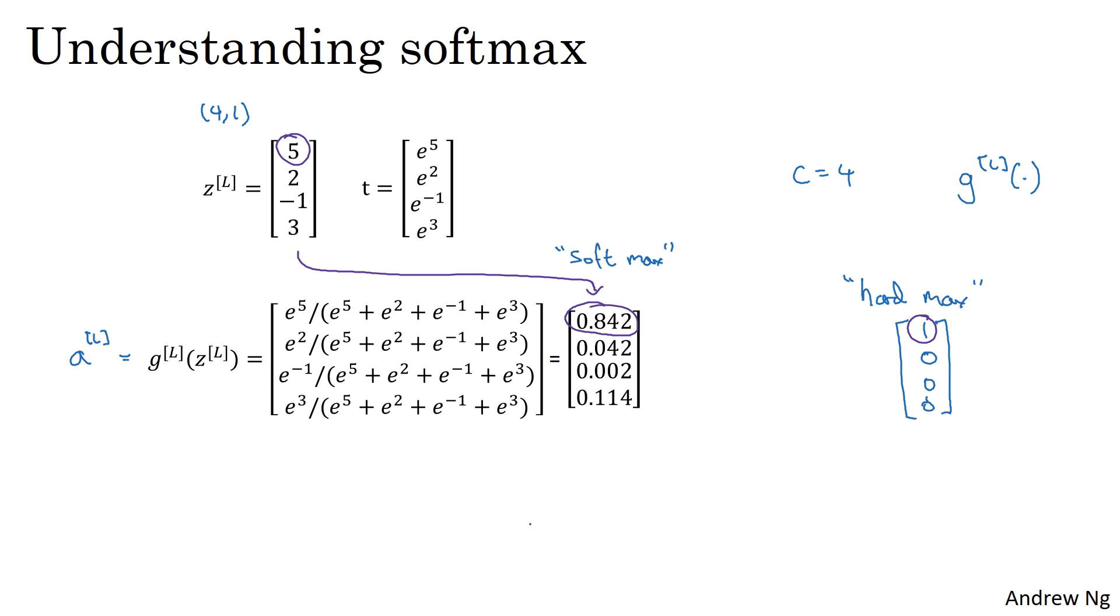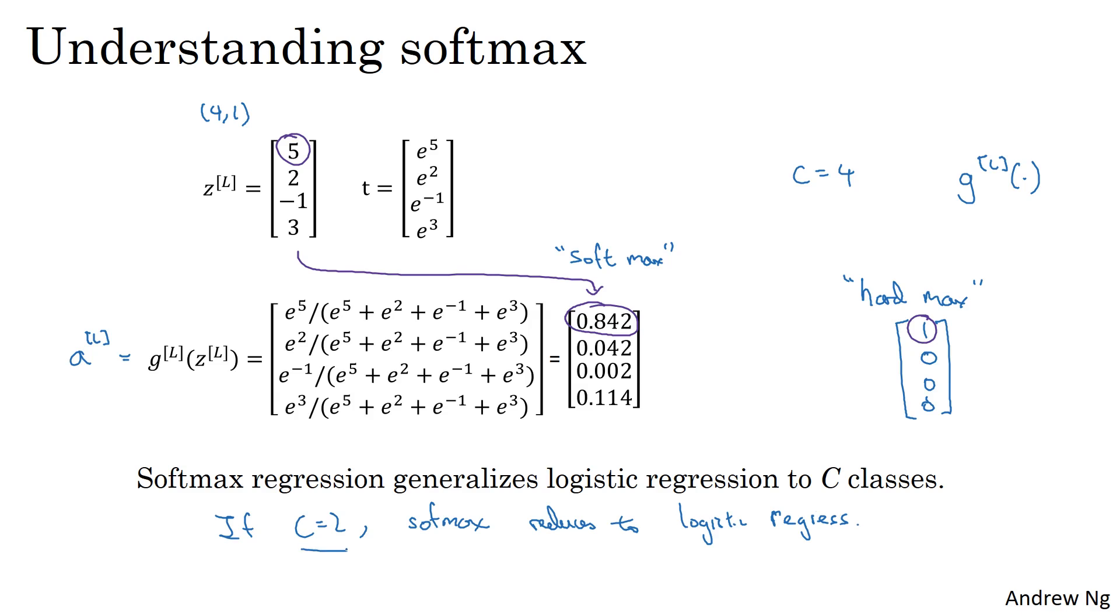And one thing I didn't really show, but I alluded to, is that softmax regression or the softmax activation function generalizes the logistic activation function to C classes rather than just two classes. And it turns out that if C is equal to 2, then softmax with C equals 2 essentially reduces to logistic regression.